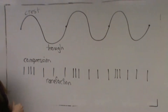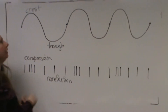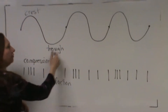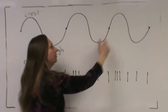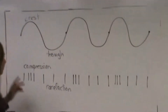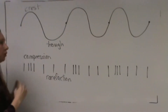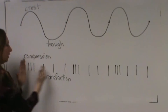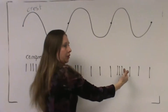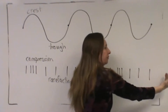A transverse wave has alternating crest, trough, crest, trough, crest, trough. The longitudinal wave has alternating compression, rarefaction, compression, rarefaction, compression, rarefaction.